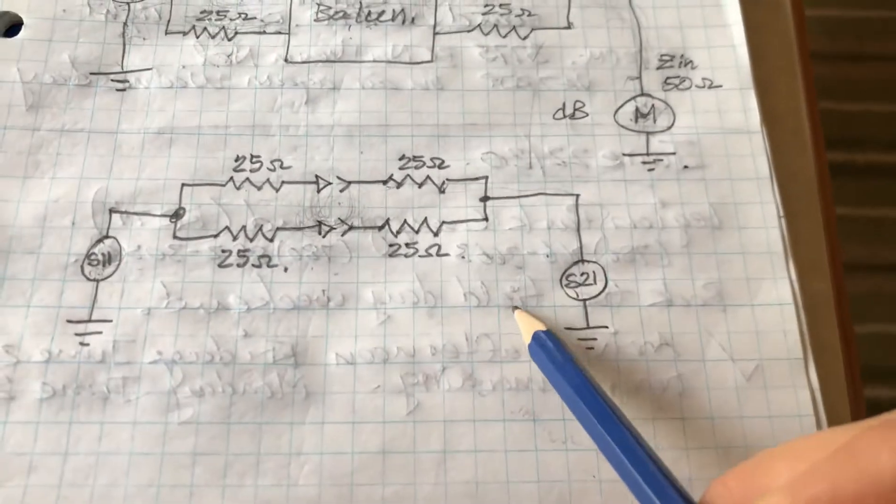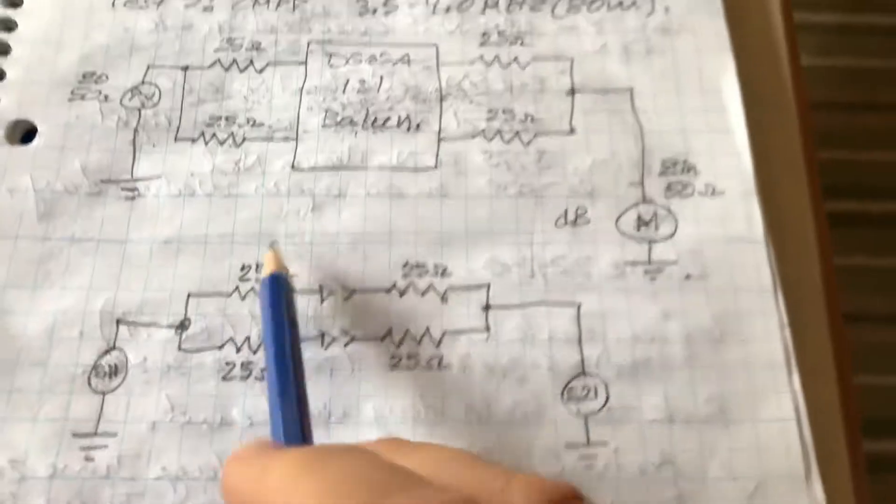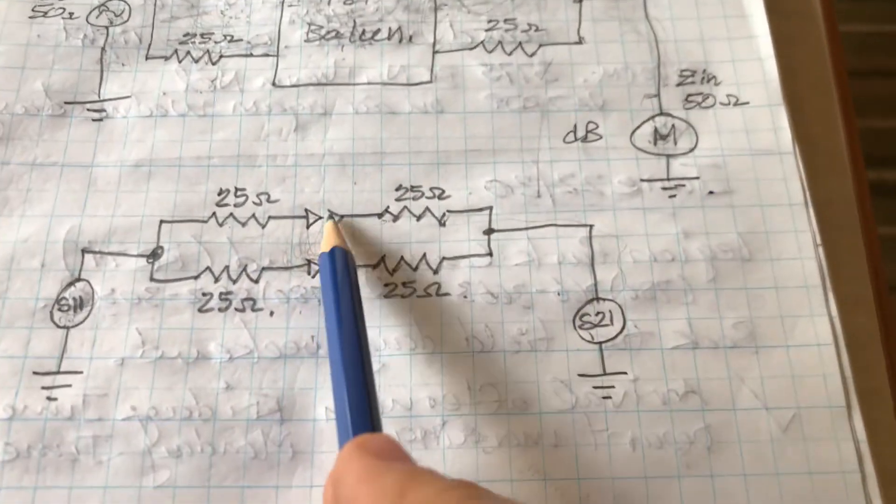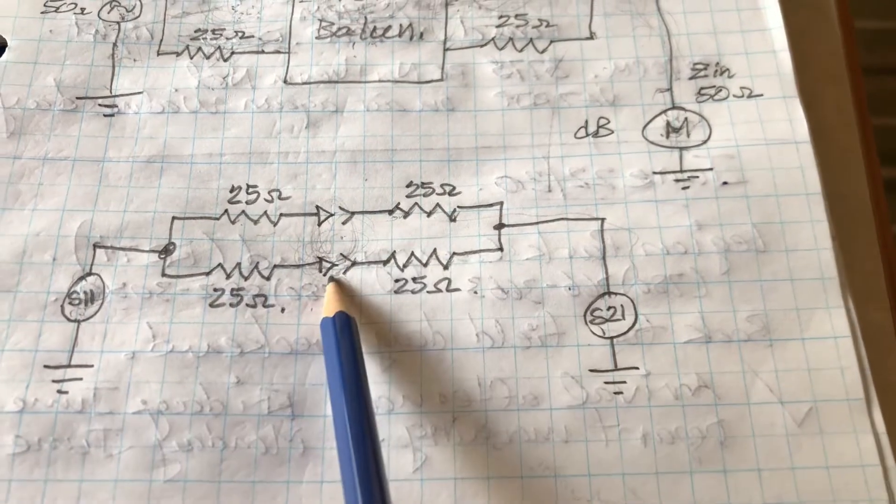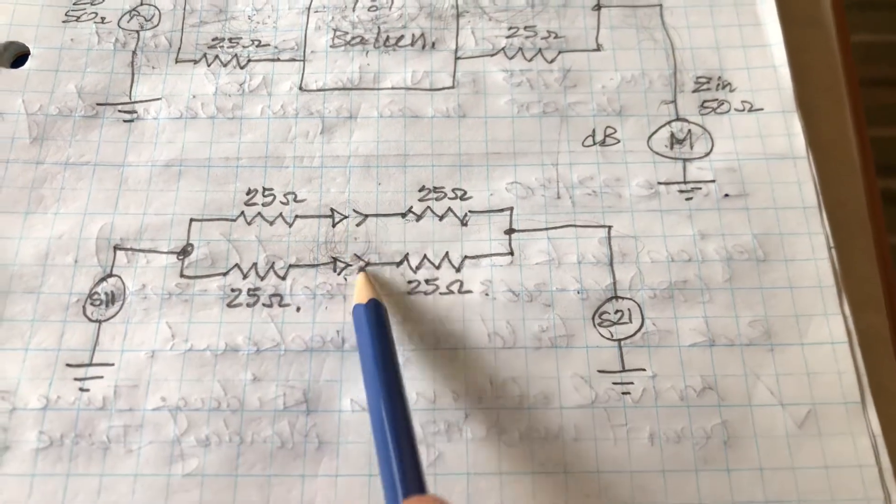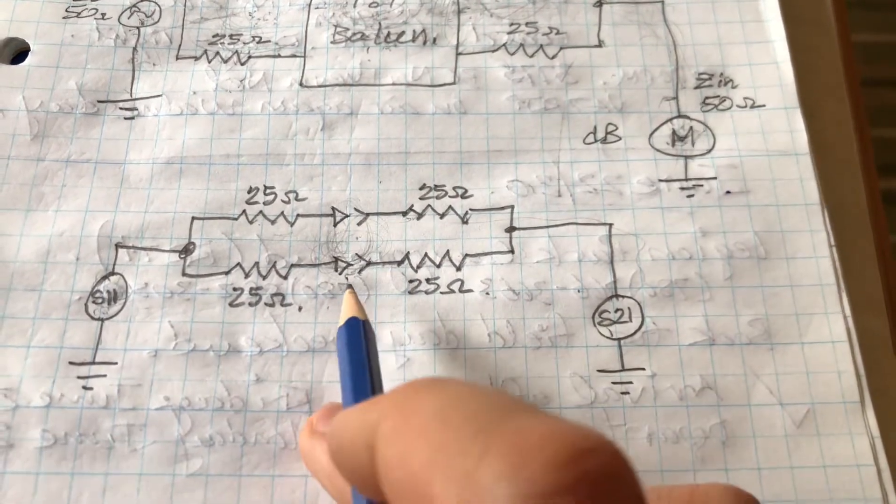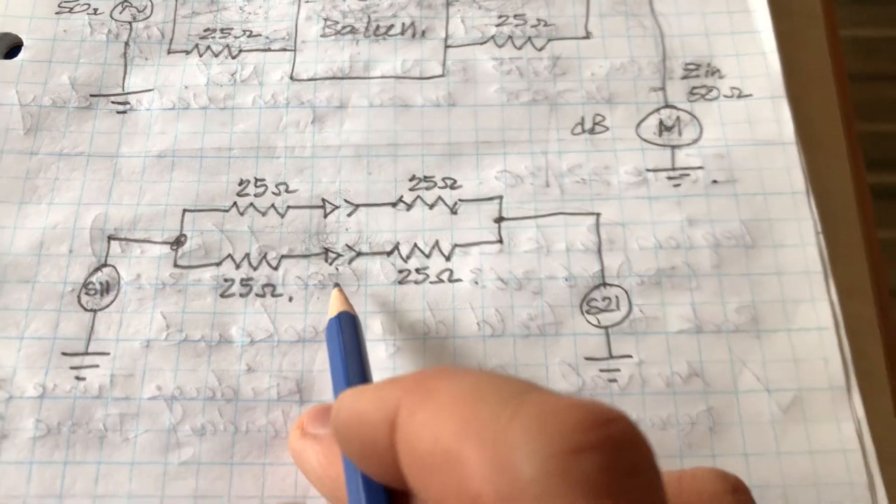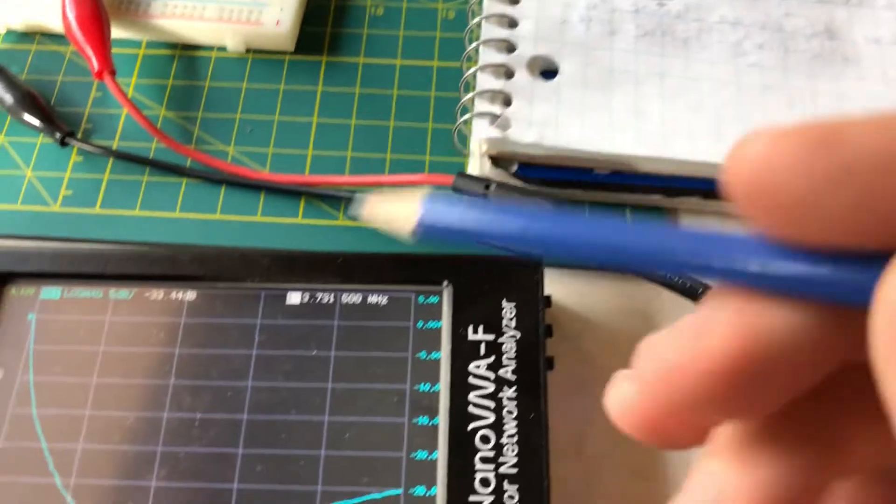So what I've done is I've tried my best to calibrate the VNA. So I've removed the balun and connected these together and I've told the VNA that that's 0 dB loss. Then I disconnected them, told the VNA that that is maximum loss. I think this thing's good for about 70 dB, if I remember correctly.